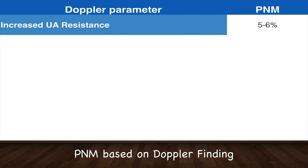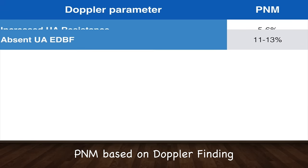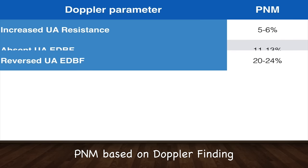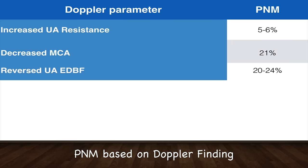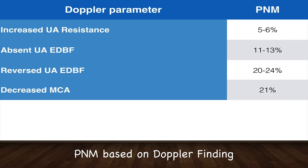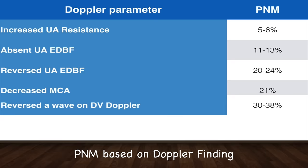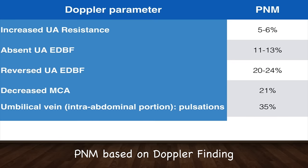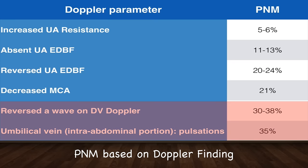This table shows perinatal mortality rates based on Doppler parameters observed. You can see that mortality increases significantly when one sees changes in the ductus venosus and umbilical vein blood flow. Therefore, it is recommended that the fetus should be delivered before the development of absent or reverse blood flow of the ductus venosus or pulsations in the umbilical vein.